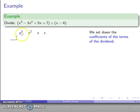I want to set down my coefficients. So my x³ term, the coefficient of that is 1. My x² term, the coefficient is minus 3. My x term, my coefficient is plus 5. My constant term, that's going to be 7. So there's my setup.